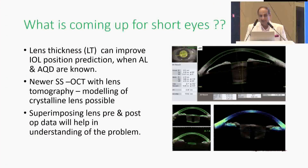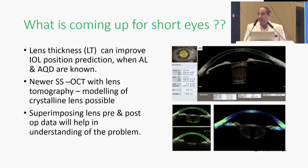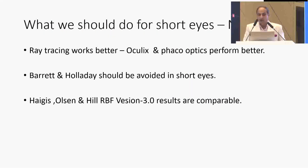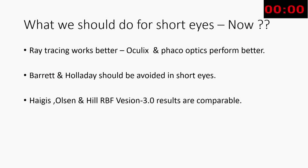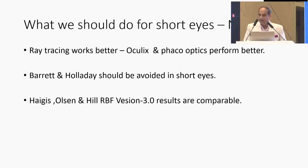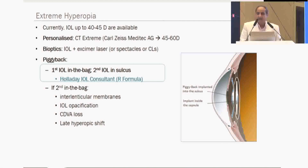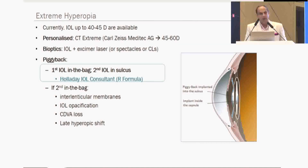What is coming up for short eyes? Lens thickness can improve IOL position prediction because postoperative ELP is very important. Newer swept-source OCT with lens tomography modeling of the crystalline lens is possible. Superimposing lens pre- and post-op data will help understanding of the problem. Ray tracing works better, Aculix and phaco-optics perform better, and Barret and Holladay should be avoided in short eyes while Haigis, Olson, and Hill RBF give comparable results.